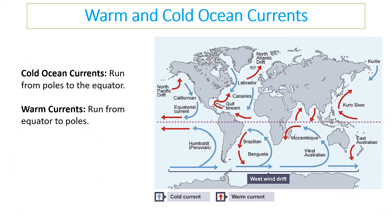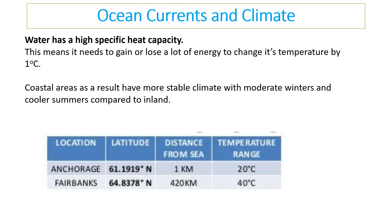There are two types of currents to know about: cold water currents, which run from the poles to the equator carrying cold water towards the equator, and warm water currents which take warm water from the equator towards the poles.